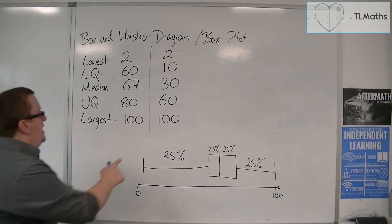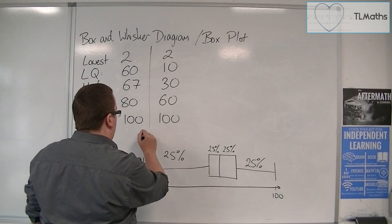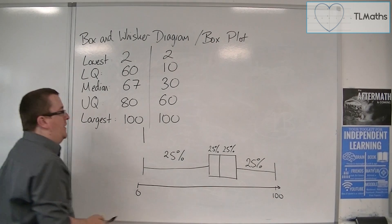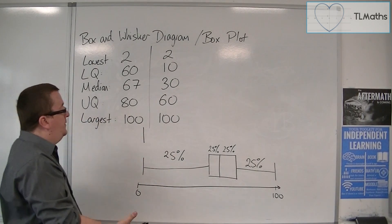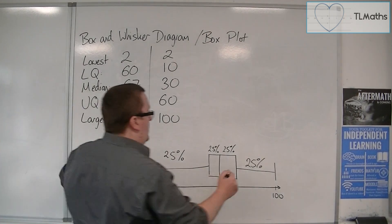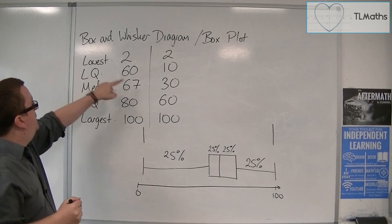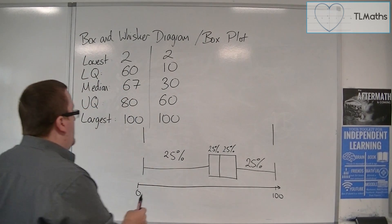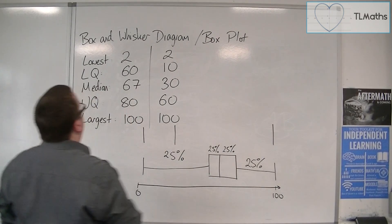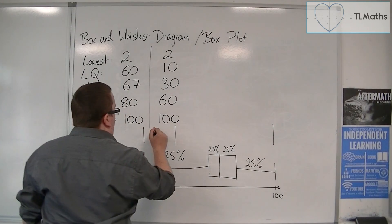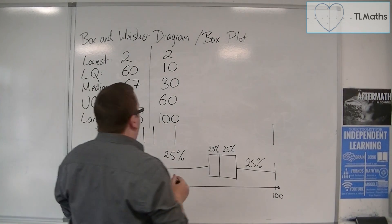So now what we would have is a lowest point at 2, and we can draw the second box and whisker diagram on top of the first. The largest is at 100, exactly where that one was. The median is this time at 30, so 30 is about there. The lower quartile is at 10, and the upper quartile is at 60.